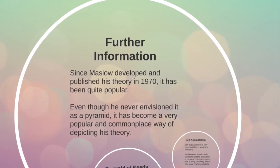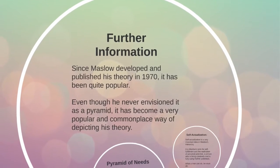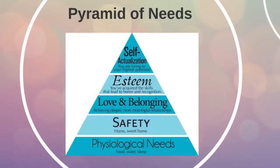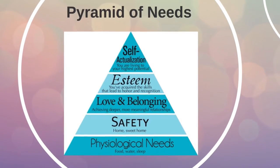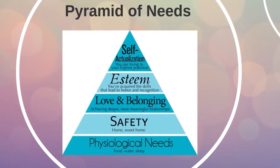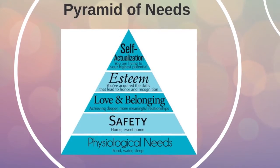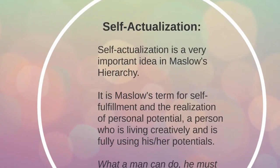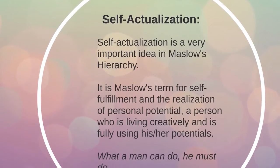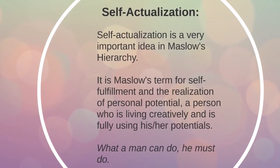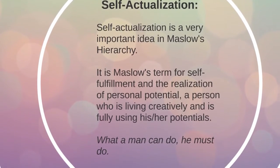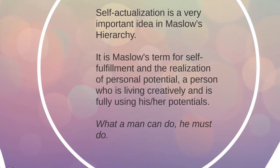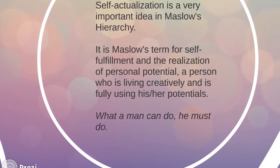After its publication in 1970, Maslow's Hierarchy has attained worldwide popularity. This hierarchy is often depicted in a pyramid format, although Maslow never indicated such specification in his theory. Self-actualization is described by Maslow as the realization of one's potential. Expressing one's creativity, quest for spiritual enlightenment, and the pursuit of knowledge are all examples of self-actualization.